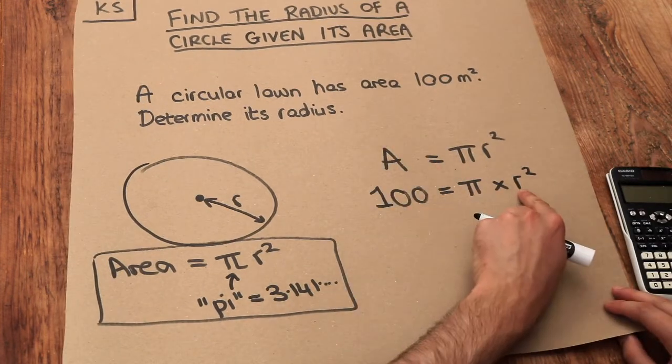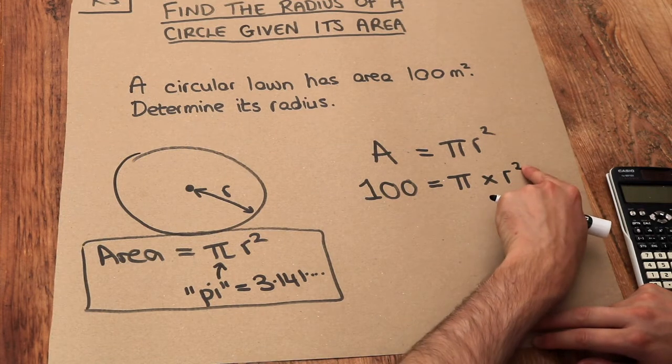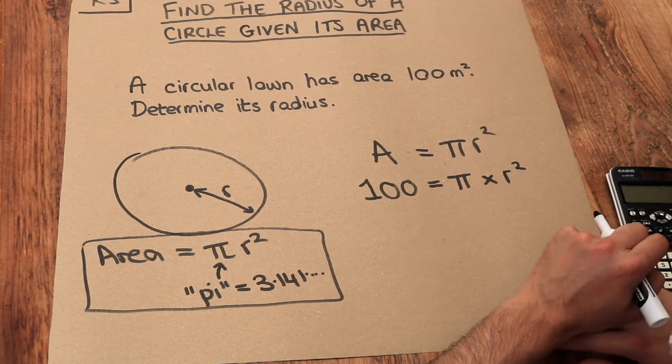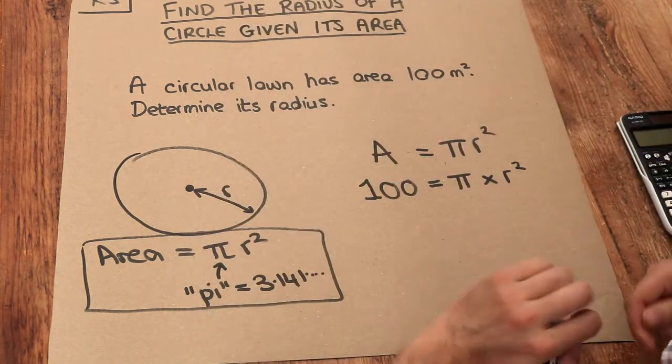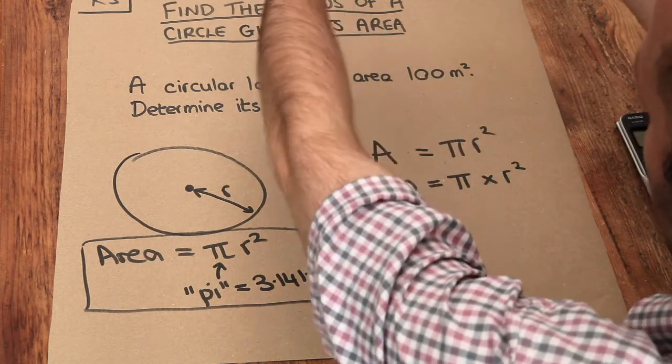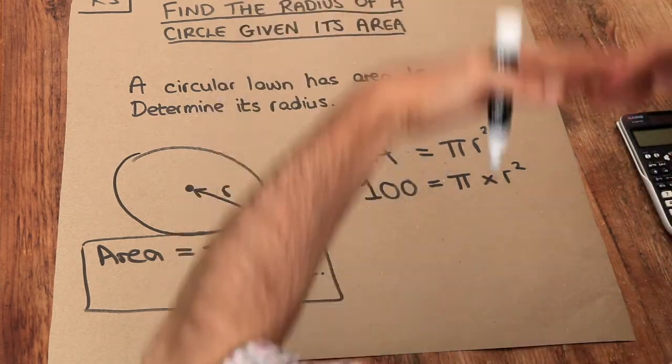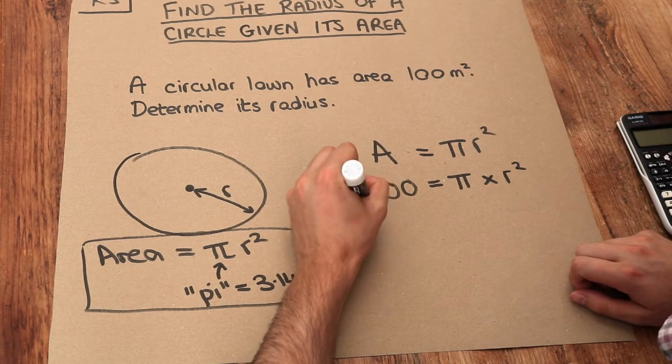Now I need to solve for r because I want to find the radius. So let's think what's happening to r - r is being squared and then multiplied by pi. Remember to solve the equation you undo these things in reverse order. So if we squared and then multiply by pi, we need to undo that times by pi first by dividing by pi. So to get rid of that times by pi, we divide both sides by pi.